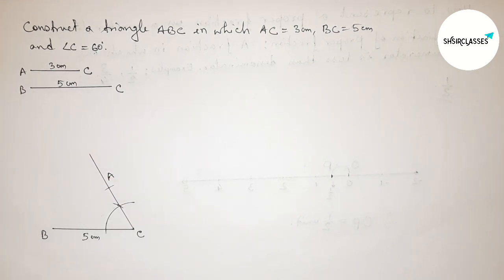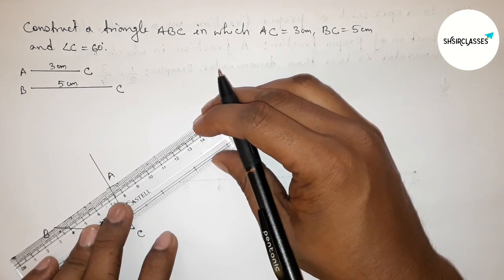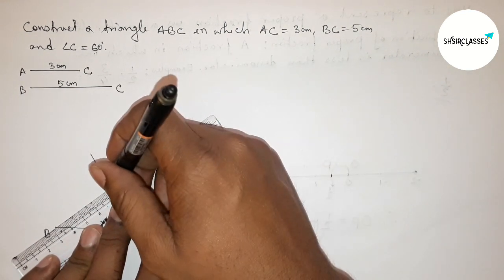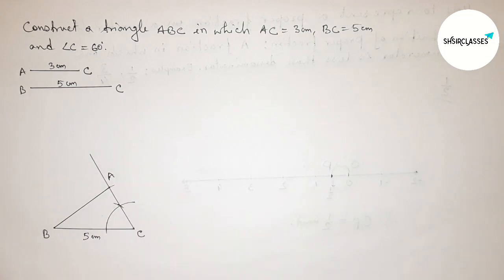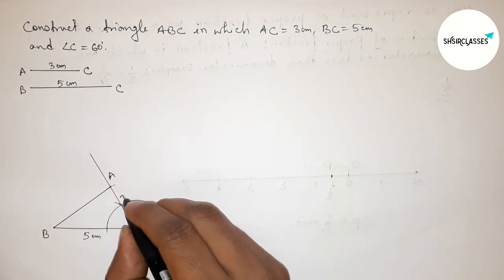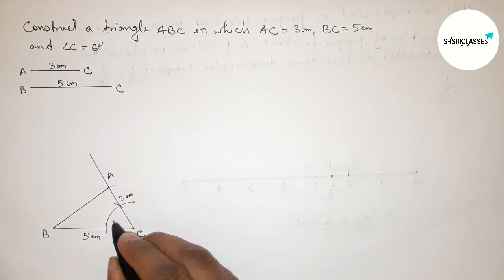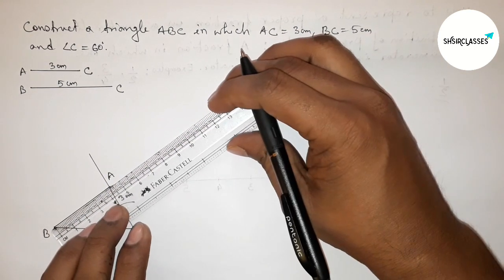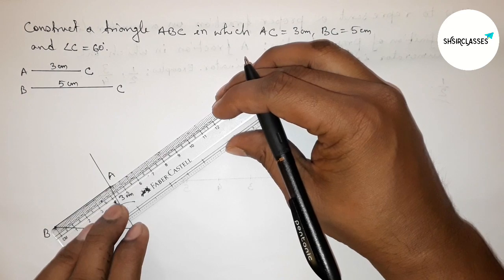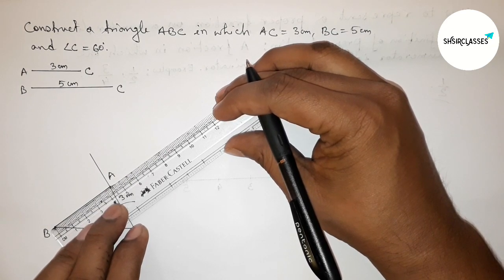Taking point A, then joining A and B to get triangle ABC. So here AC is 3 centimeters and the angle C is 60 degrees. Now measuring the length of AB with the help of a scale.